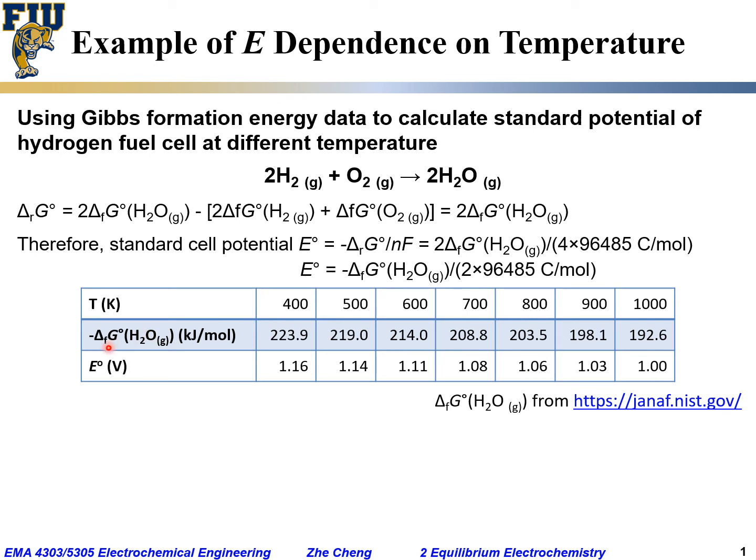If you check JANAF tables or CRC Handbook, you can get the formation energy for water in the gas state at different temperatures. In this case, I listed from 400 kelvin all the way to 1000 kelvin in the unit of kJ per mole. I put a negative sign here so these values are positive.